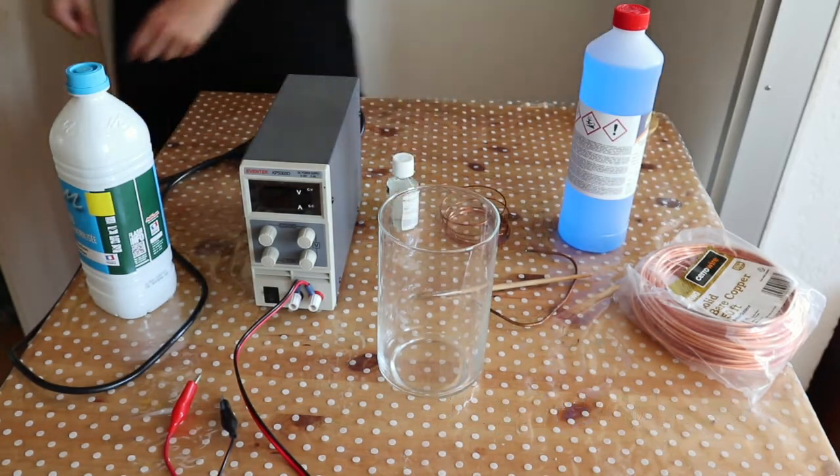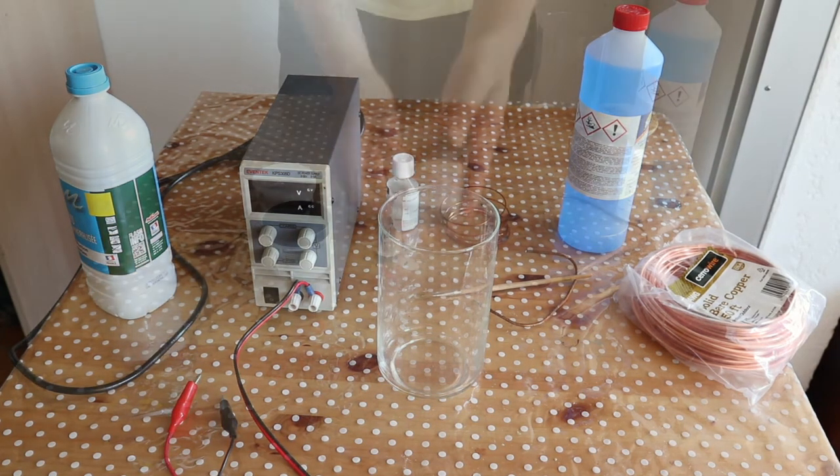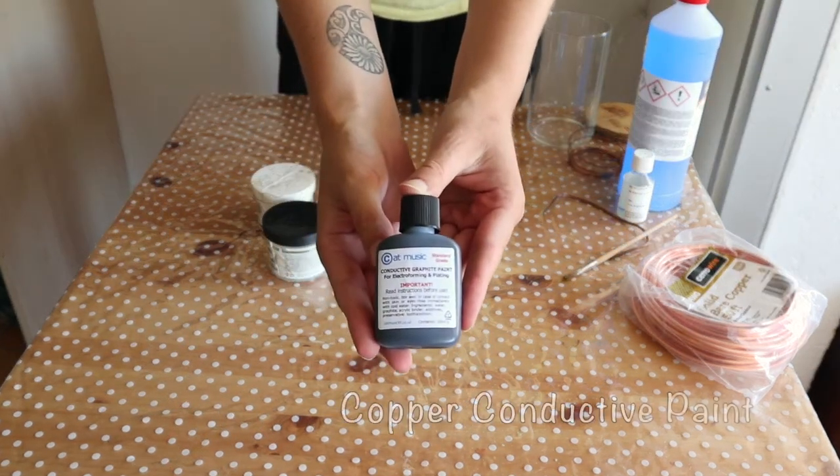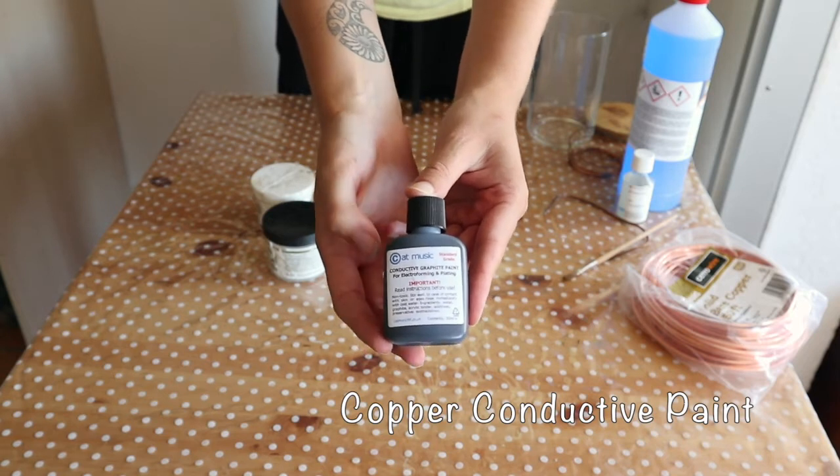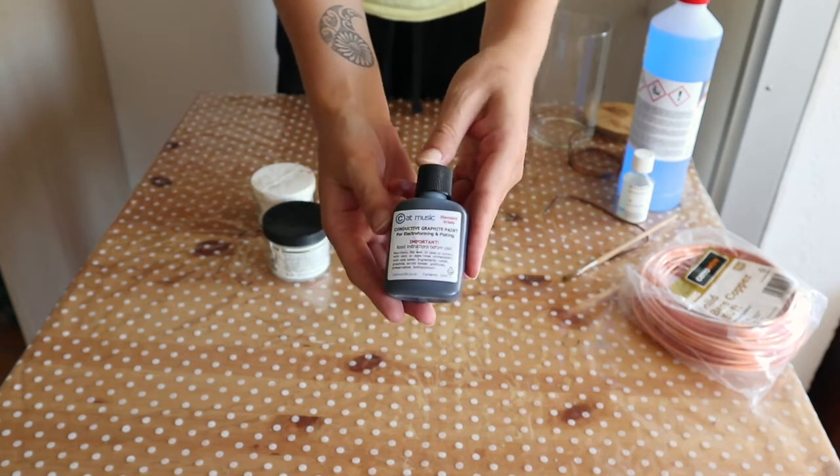I also want to give you a couple of other important supplies that I need for electroforming. You need copper conductive paint to make your non-conductive items conductive. I get mine on Etsy.